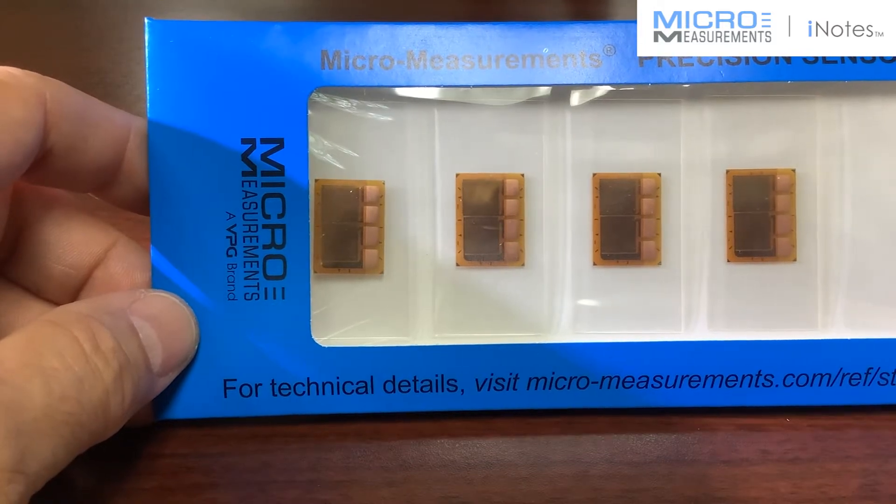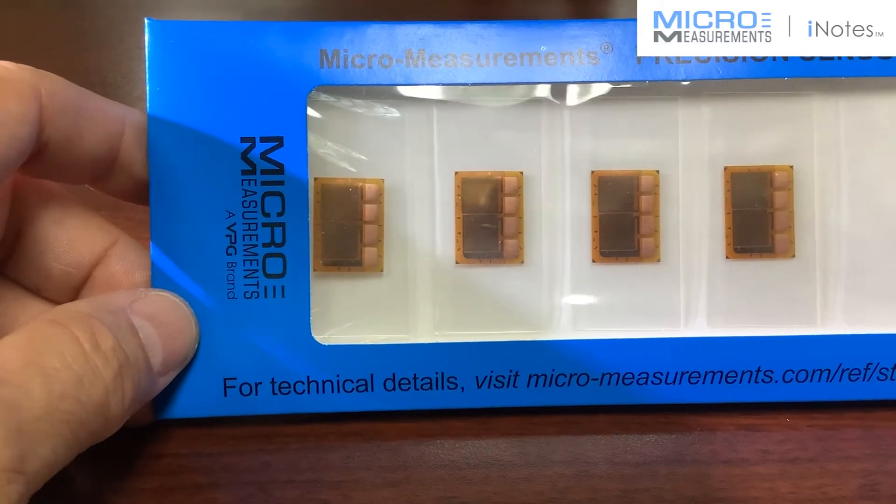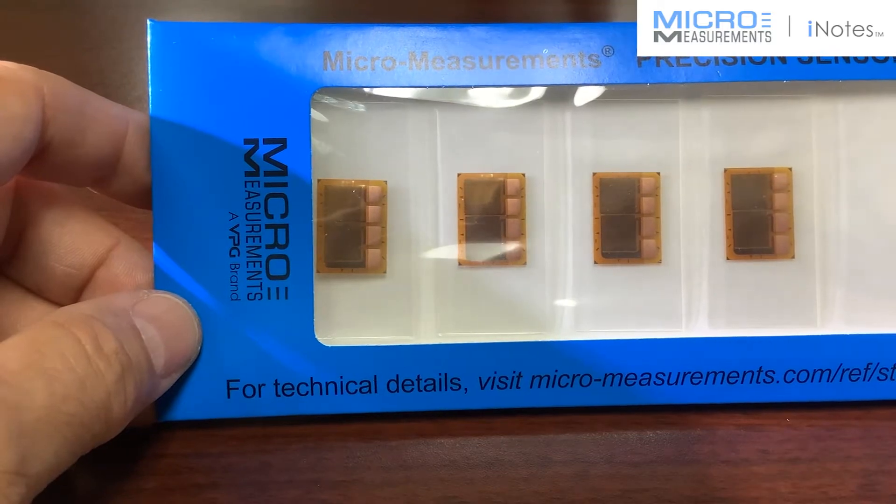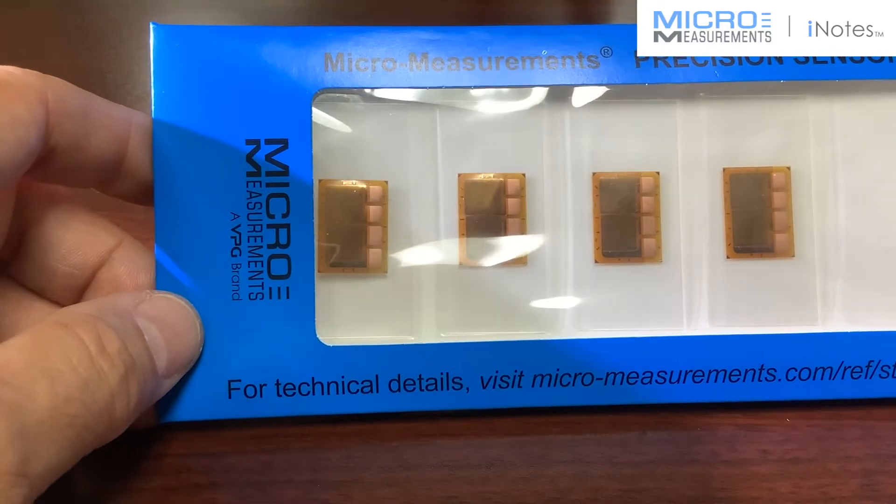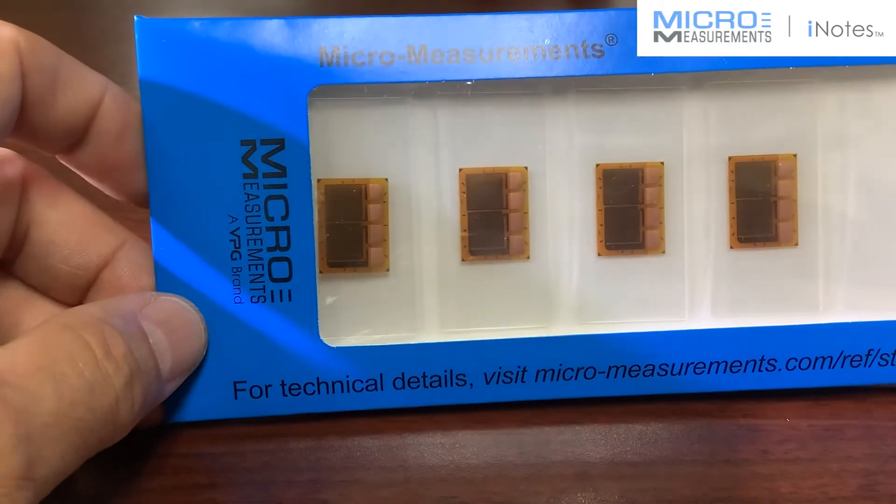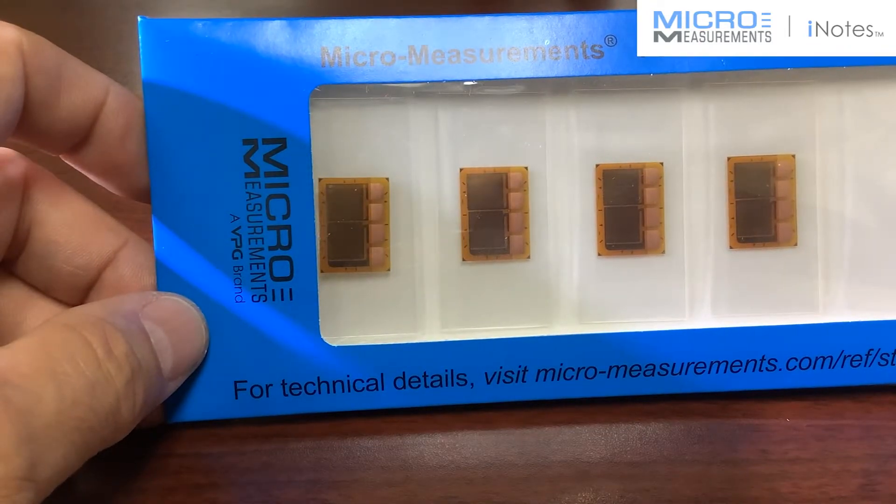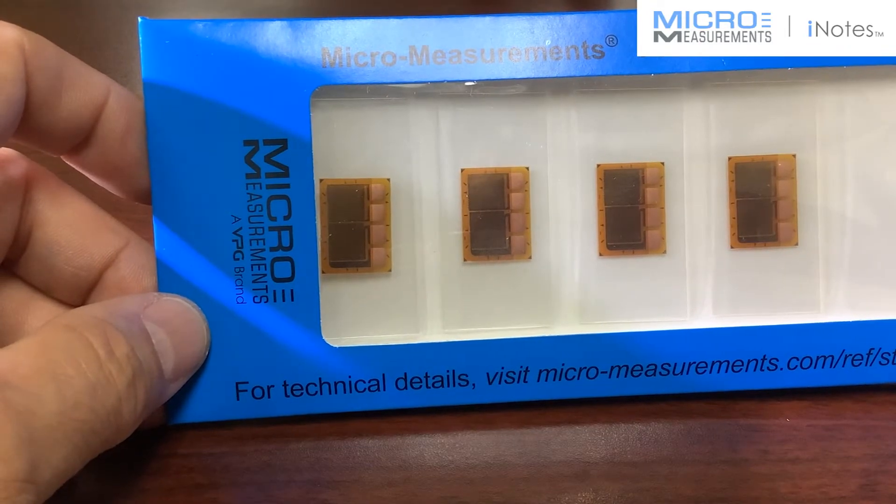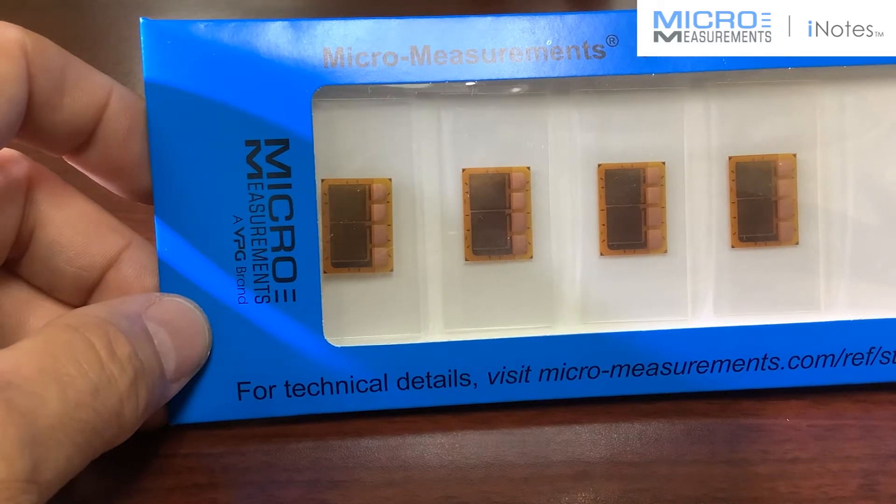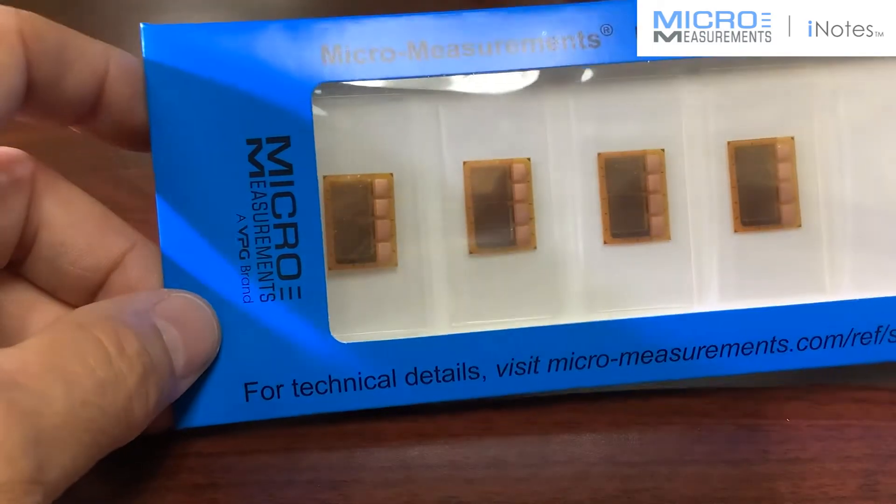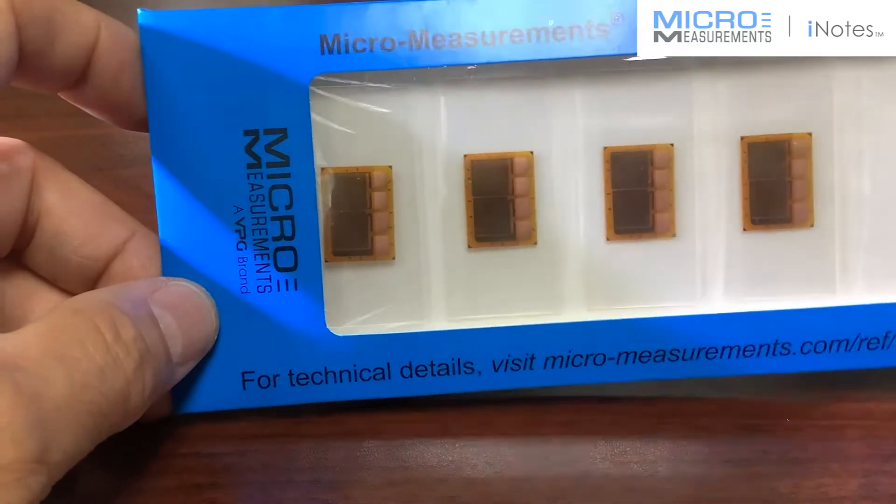Today, I'd like to show you one of our newest T-rosettes. T-rosette simply means that you purchase essentially one strain gauge, but it has two sensitive grids on it, one of them being 90 degrees to the other. We'll get into why you might do that here in a few minutes, but I just wanted to show you this new strain gauge.